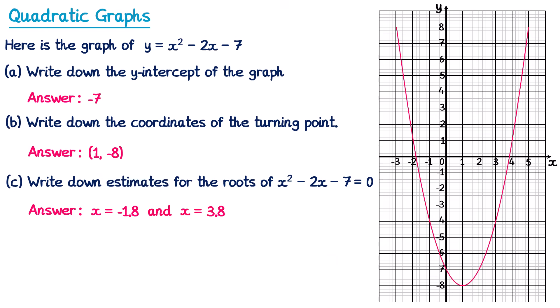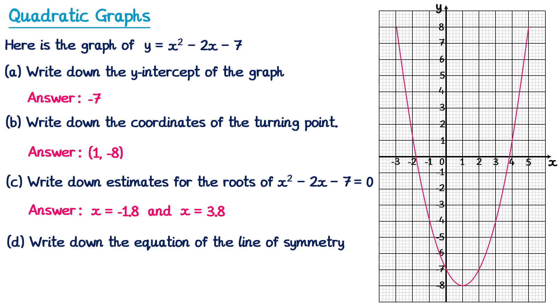The final part is the equation of the line of symmetry. The line goes through the turning point, which is at x equals 1 on the x-axis, so the answer is x equals 1.